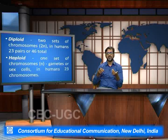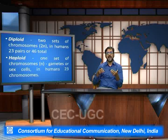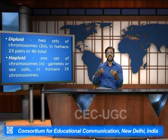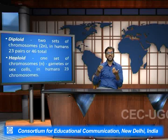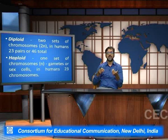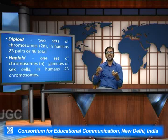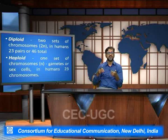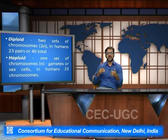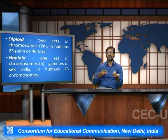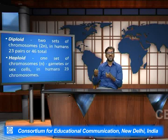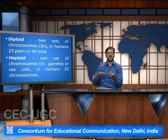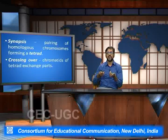The haploid is one set of chromosomes, which is n copy number. Gametes and sex cells in humans are haploid, so there are 23 chromosomes — the autosomes and one sex chromosome which is present in the haploid copy number.